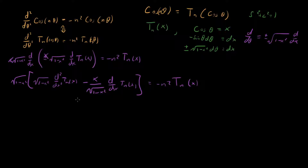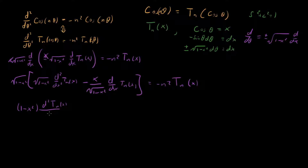This simplifies pretty easily: one-minus-x-squared combines and cancels, and multiplying this whole thing out we're left with one-minus-x-squared times d-squared T_n of x over dx-squared, minus x times dT_n of x over dx, equals minus n-squared T_n of x.